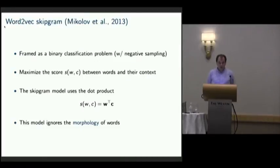One of the big limitations of this model is that it ignores morphology because we have one different vector representation for each word.